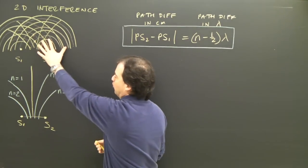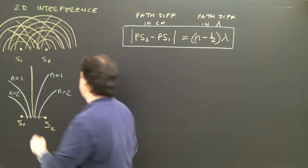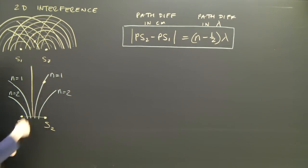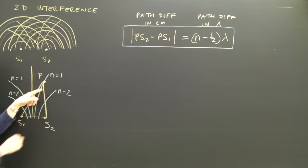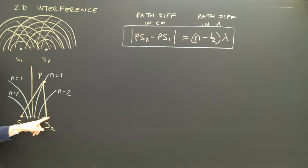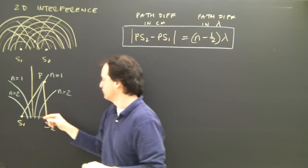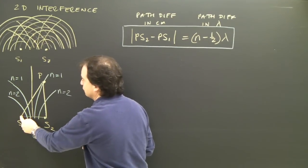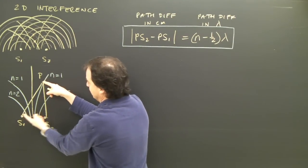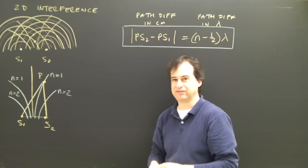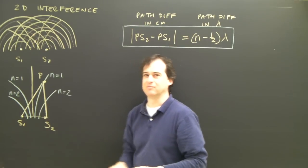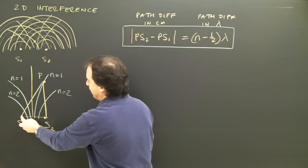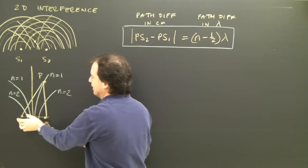Imagine I've done this in water and marked out the nodes. If I pick any point on the first nodal line and draw a line to each source — call this point P — in order for there to be a node here, meaning a crest meeting a trough, one wave must have traveled a little bit further than the other. This line is longer than that line, and we call that the path difference. The path difference is very important — it underlies the mathematics of this.